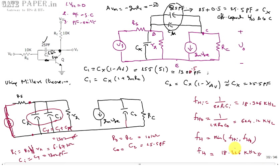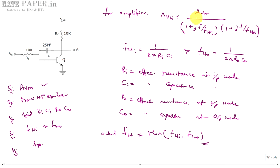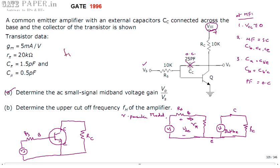The actual upper cutoff frequency FH = minimum(FHI, FH0) = minimum(18.326 kHz, 624.12 kHz) = 18.326 kHz. The minimum is chosen because that pole is closer to the origin and dominates the response — it is the dominant pole. So the upper cutoff frequency of this problem is 18.326 kHz. Final answers: AVM = -50, AVS = -33.33, and FH = 18.326 kHz.